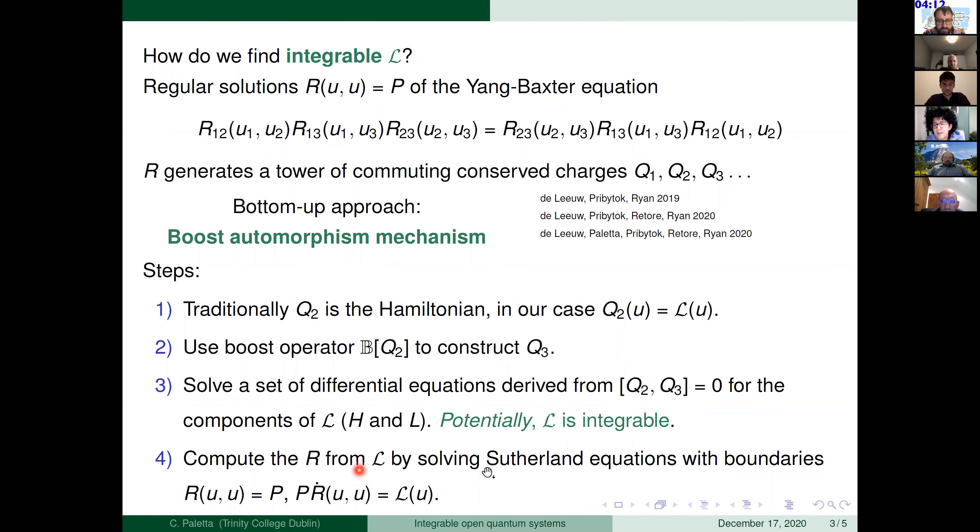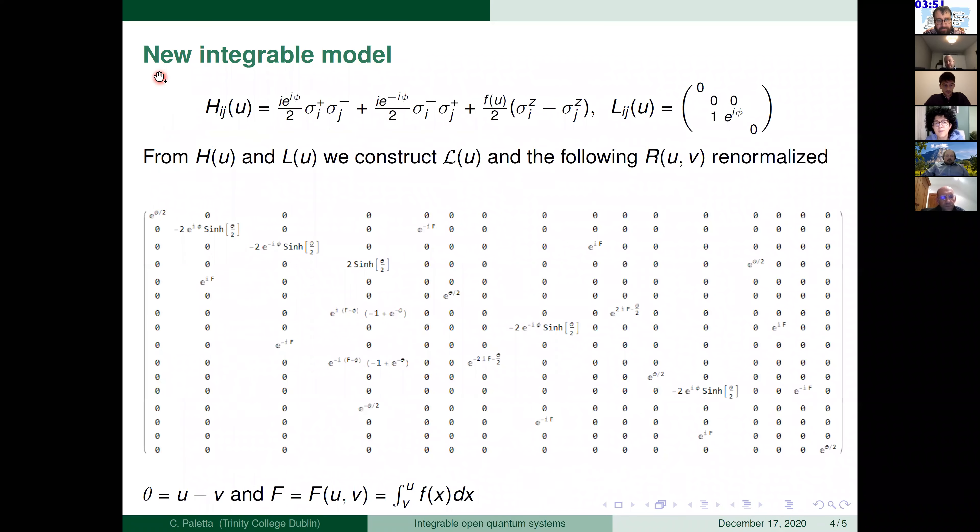So if we have the R, then we are sure that we can say that the super operator is integrable. In particular, using this method and starting for a particular ansatz of the Hamiltonian and the jump operator, we found the following new integrable model that is characterized by the following Hamiltonian that is as well a 4×4 matrix and the following L, the jump operator.